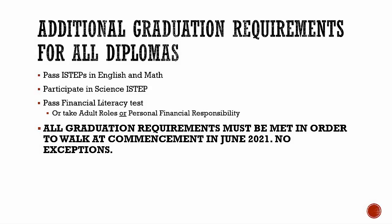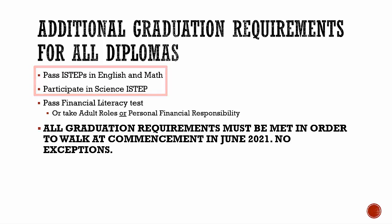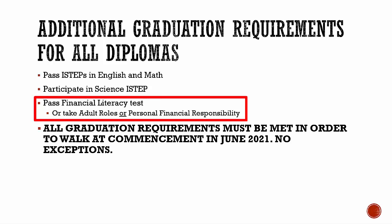There are a few additional requirements for graduating with your high school diploma. You must pass both the English and Math I-STEP test. You already took the test for the first time during the spring of your sophomore year. For those of you who have not yet passed both sections, you will be taking it again in February, and your counselor will meet with you individually to discuss options. You must also show proficiency in financial literacy by either passing the financial literacy test or by taking and passing either the adult roles class or the personal finance class.